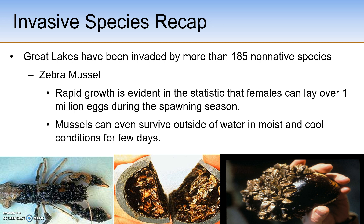The first established population came from the Canadian waters of Lake St. Clair, a water body connecting Lake Huron and Lake Erie. By 1990, zebra mussels had been found in all of the Great Lakes — just two years after the original sighting. The following year they escaped the Great Lakes basin and found their way into the Illinois and Hudson Rivers. The Illinois River was key to their introduction into the Mississippi River watershed, which covers about 1.2 million square miles.